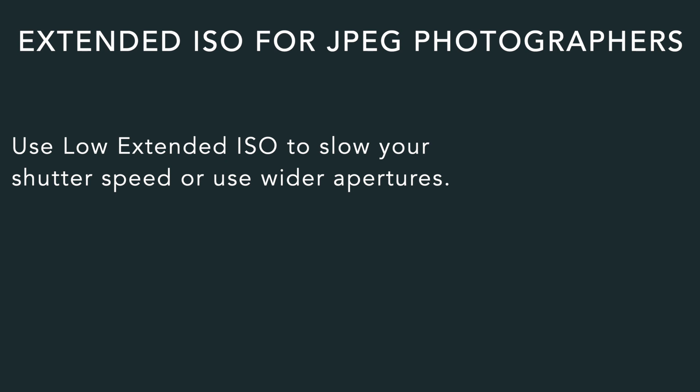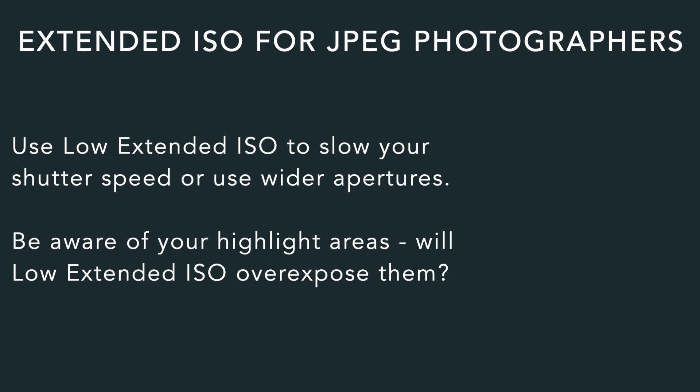There are certainly times where you may want to use the extended ISO ranges — I don't want you to think you should never use it. If you're a JPEG photographer getting images straight out of the camera, which is a fun and fulfilling thing to do, the extended ISO ranges, particularly the low settings, do have some utility. They allow you to slow your shutter speed a bit more to show movement, or open up your aperture to isolate subjects, especially in bright light. Just be aware of the highlights — if you're playing right on the edge of clipping, remember that the exposure sent to the processor will actually be overexposed.